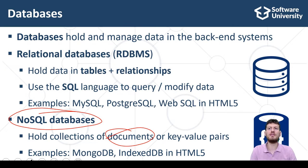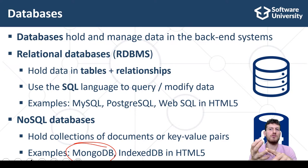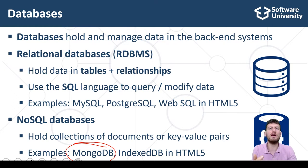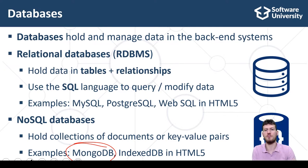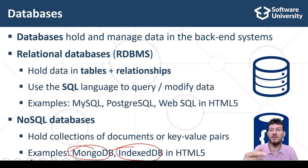Document databases, like MongoDB, manage collections of documents such as products or vendors, where each document has a set of properties like name, price and description. Document databases support retrieving and querying document collections, and creating, modifying and deleting documents. Examples of document-based NoSQL databases are MongoDB and IndexedDB in the HTML5 platform.